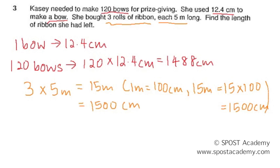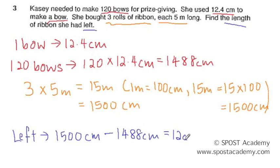The question is asking to find the length of ribbon she had left. So in order to find what's left, I would use 1,500 cm, which is the ribbon that she bought, minus 1,488 cm, and that will give us 12 cm.